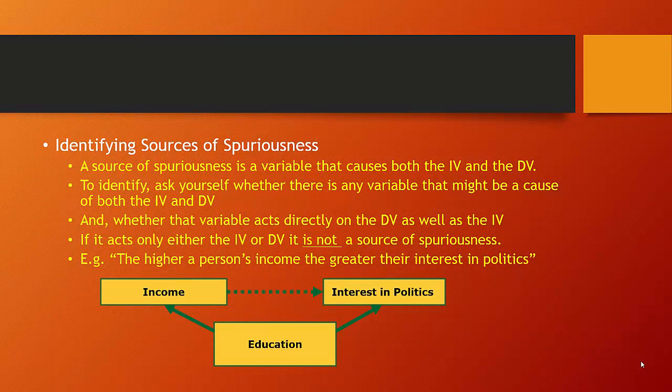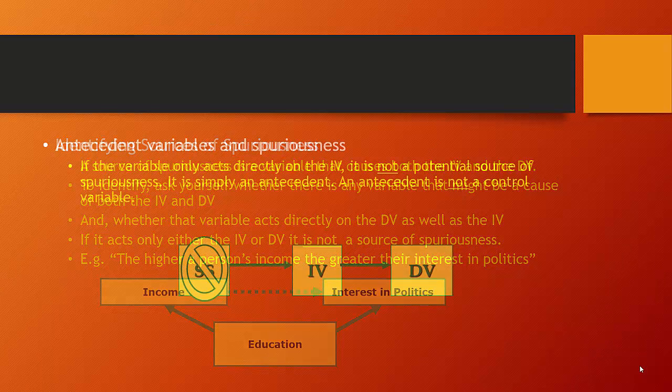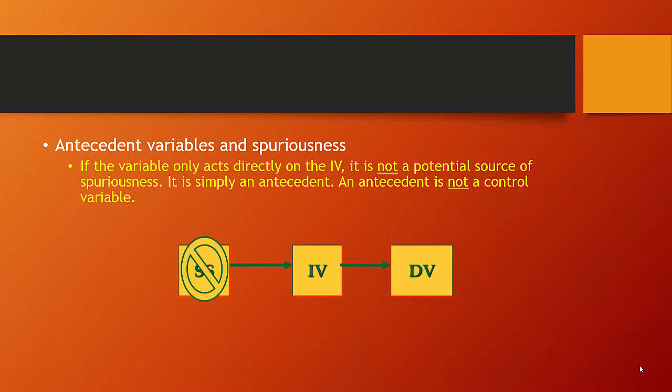Now, to be a source of spuriousness, it has to act on both the independent and the dependent variable. If it acts on the independent variable only, it is not a source of spuriousness, it is an antecedent variable. It just comes before.